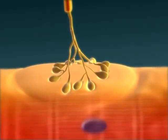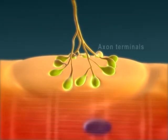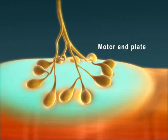This junction is a chemical synapse consisting of the points of contact between the axon terminals of a motor neuron and the motor end plate of a skeletal muscle fiber.